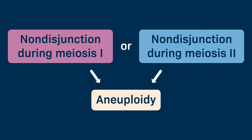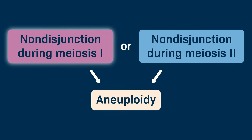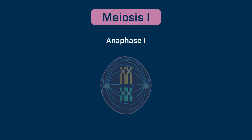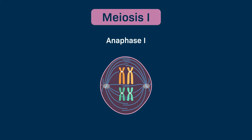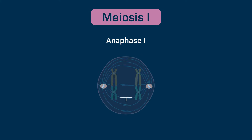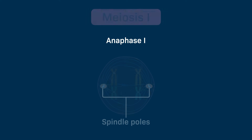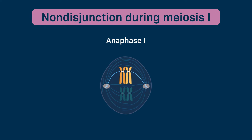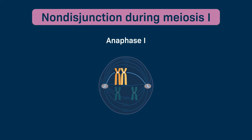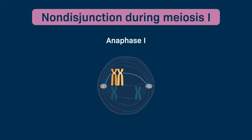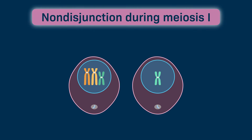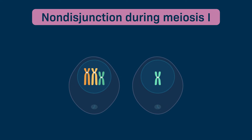Let's start by focusing on non-disjunction during meiosis 1. During anaphase 1, pairs of homologues typically separate from one another and move toward opposite spindle poles. When non-disjunction occurs, a pair of homologues doesn't separate during anaphase 1 and both homologues are pulled toward the same spindle pole. The two cells that result following non-disjunction in meiosis 1 have different numbers of chromosomes.